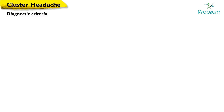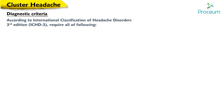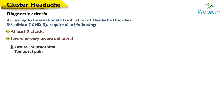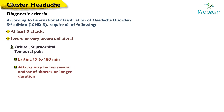Diagnostic criteria for cluster headache according to the International Classification of Headache Disorders, third edition, require all of the following: at least five attacks characterized by severe or very severe unilateral orbital, superorbital, and/or temporal pain lasting 15 to 180 minutes when untreated. During part but less than half of the time course, attacks may be less severe and/or of shorter or longer duration.